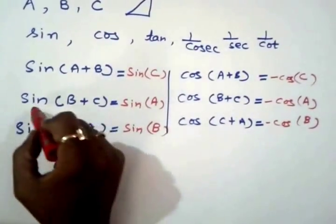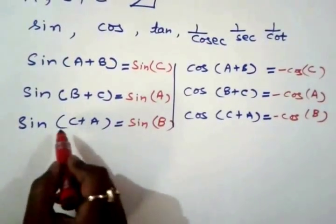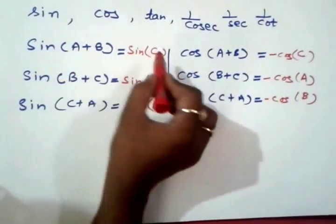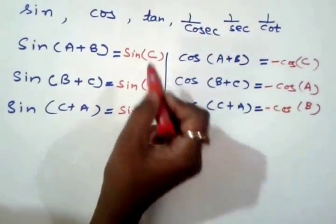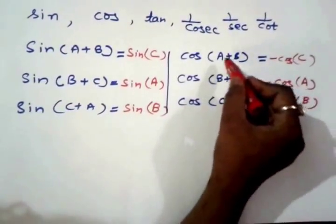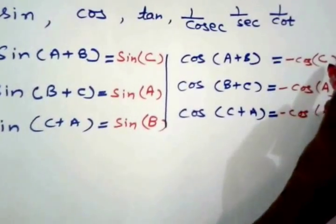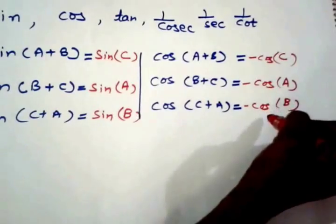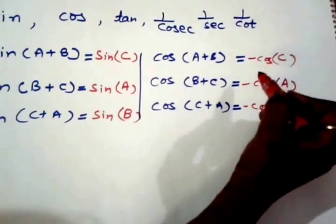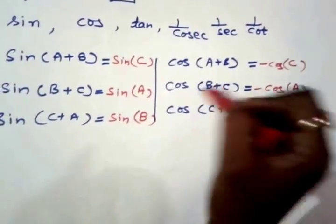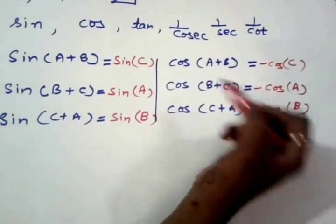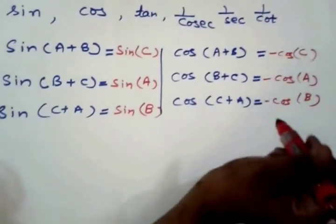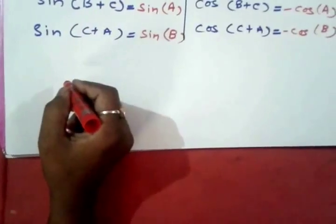sin(B+C) = sin(A), sin(C+A) = sin(B). We have written these formulas with the resultant angle. In the same way, the third angle of A and C is A, and then all of the cosine is added, but cosine becomes negative. Where there is plus, the cosine becomes negative; where there is negative, the cosine becomes positive.